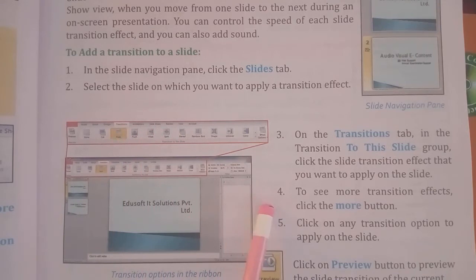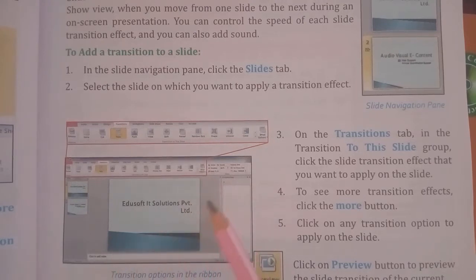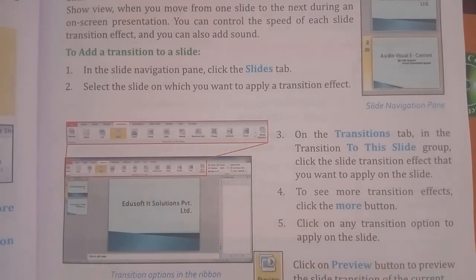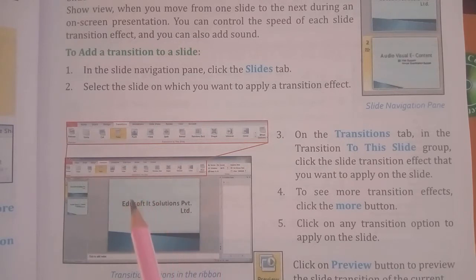In step 4, to see more transitions, click on the More button. The More button is the down arrow. If you want more transition effects, click on the More button. Then in step 5, click on any transition option to apply it to the slide.